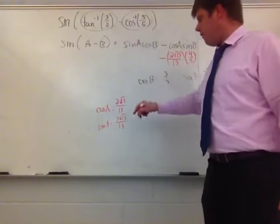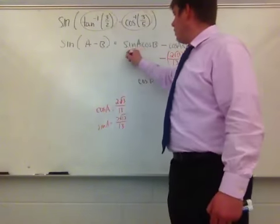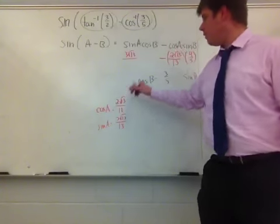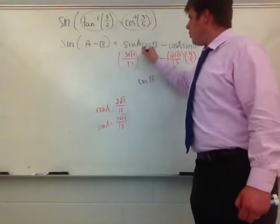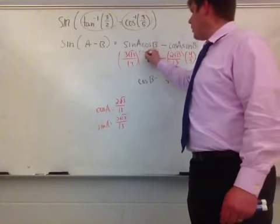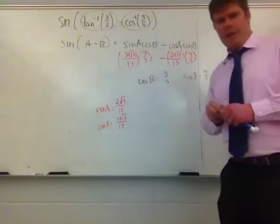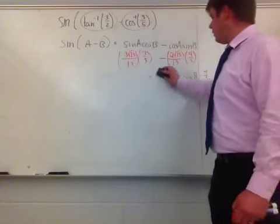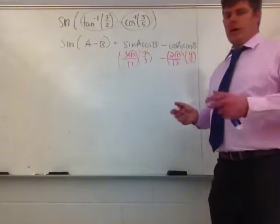And then over here for the sine of a, sine of a, wherever I see it, is 3 root 13 divided by 13. And I'm going to multiply that by cosine of b, and cosine of b here is 3 fifths, so I'm going to plug that in. So now that I have all my information plugged in, I'm just going to go ahead and simplify. So I'm going to erase this stuff that it's plugged in.